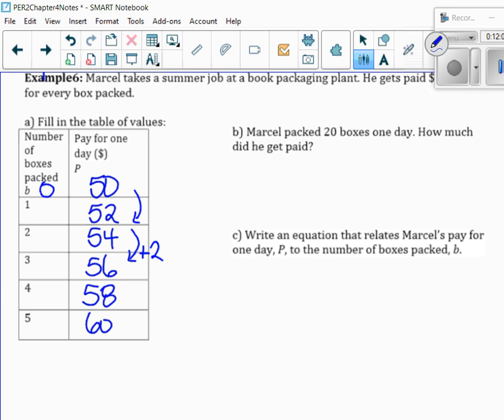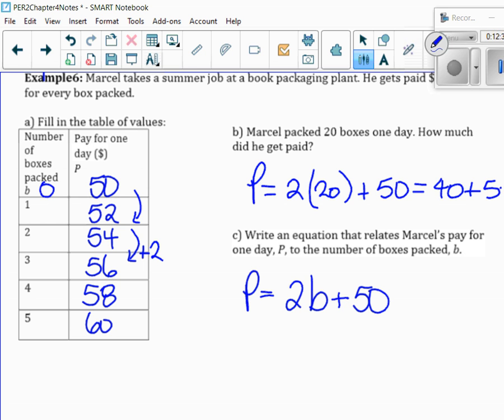So, the amount of pay, remember, that's how much it's going up by. So, two times the number of boxes plus the initial amount, which was 50. So, now it's easy to find the 20 boxes. The pay would be two times 20 boxes plus 50. So, that would be 40 plus 50 gives me $90 he made that day.